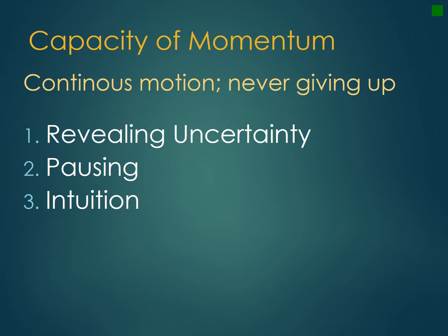The first skill we can use to promote the capacity of momentum is the skill of revealing uncertainty. Basically, when we reveal uncertainty, we are revealing that we are human and we don't have all the answers. By doing this, we are humbling ourselves and reveling in our interdependence on others. By acknowledging that we don't have all the answers and don't know how to proceed, we invite others to share responsibility for the process, outcomes, and ultimately our relationships with each other.